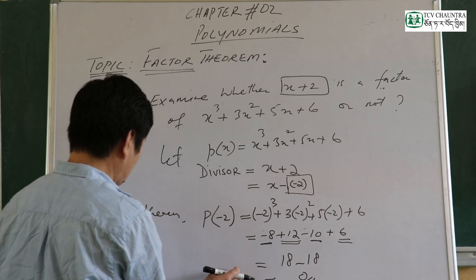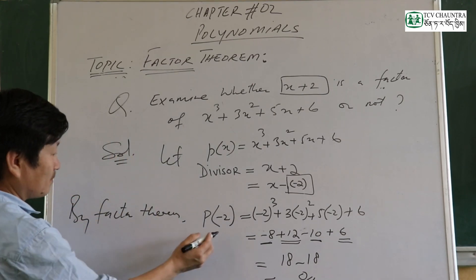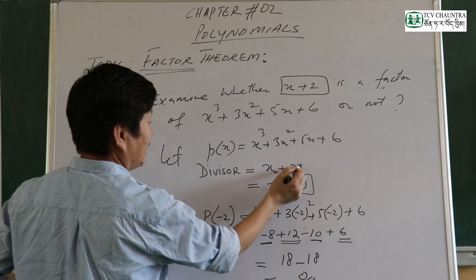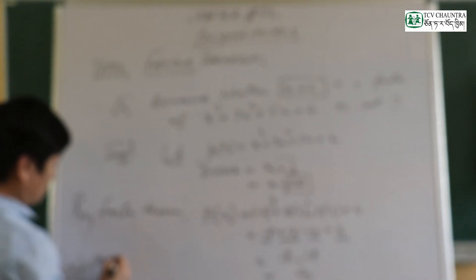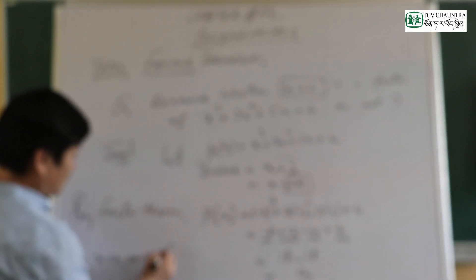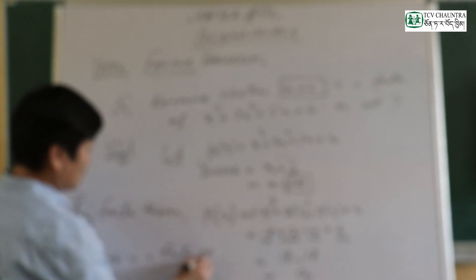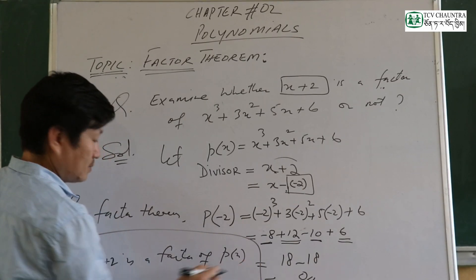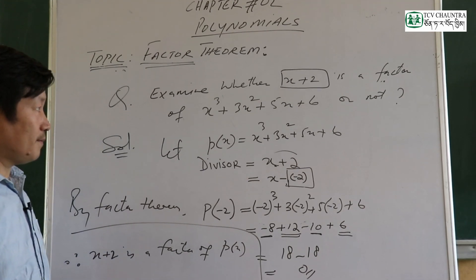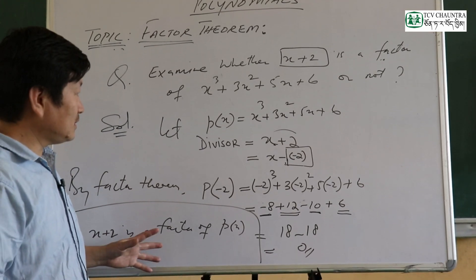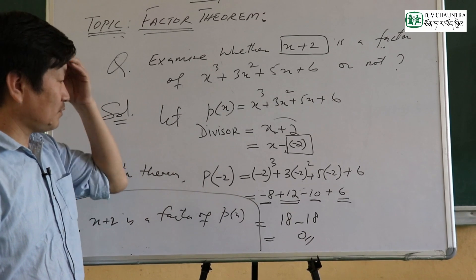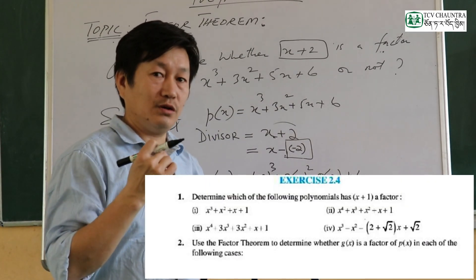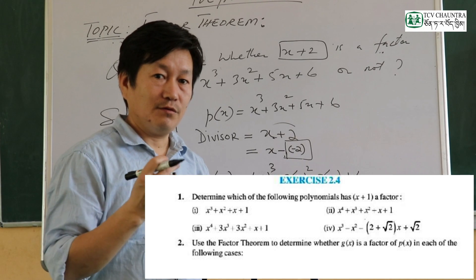Zero is the answer. Therefore, since p(negative 2) equals zero, x plus 2 is a factor of p(x). That is the factor theorem — exercise 2.4, factor 3 of the exercise.